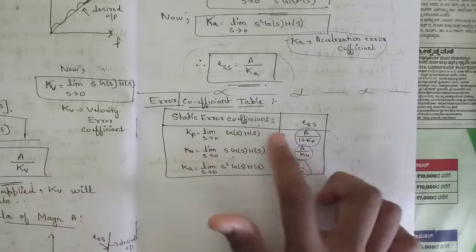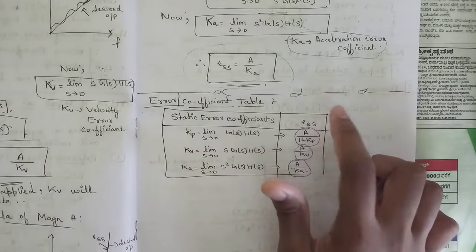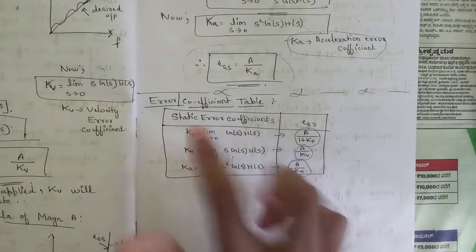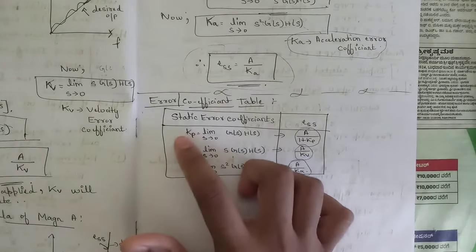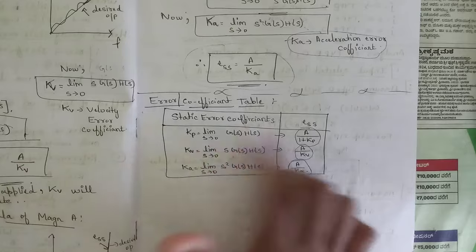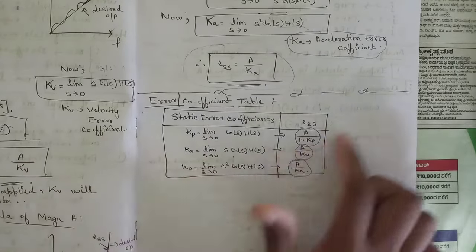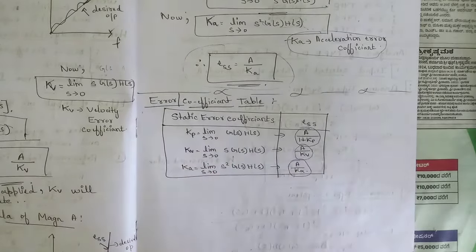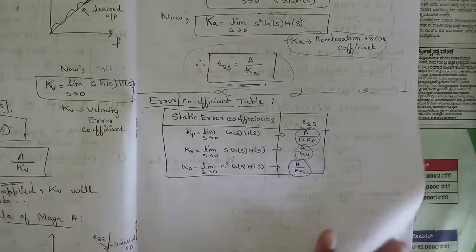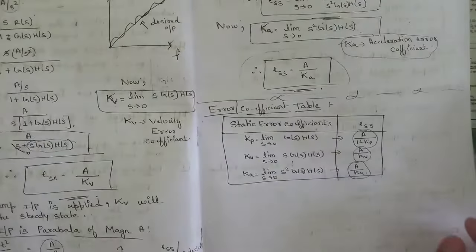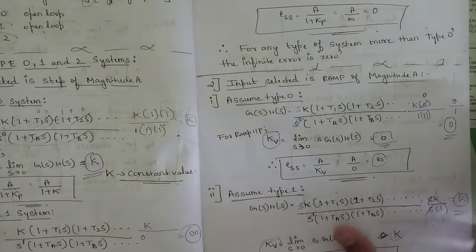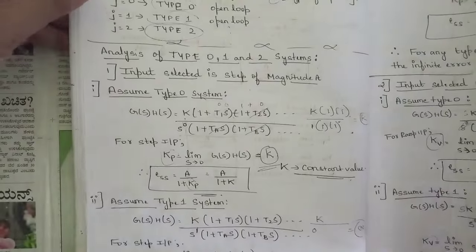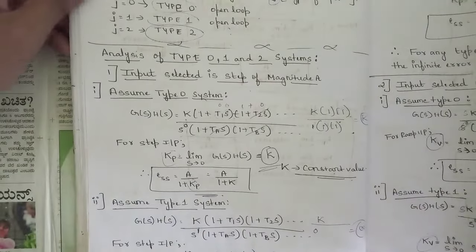This is the error coefficient table, where static error coefficients and the steady state errors caused by them are listed separately for step, ramp, and parabolic inputs. Please note it down.